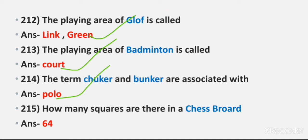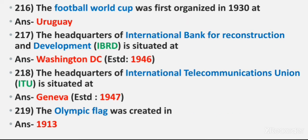Question 214: The terms 'Chukker' and 'Bunker' are associated with. Answer: Polo. Question 215: How many squares are there in a chess board? Answer: 64.